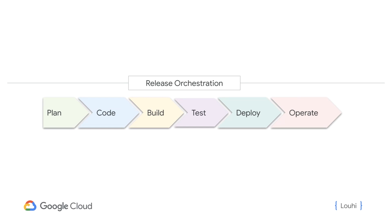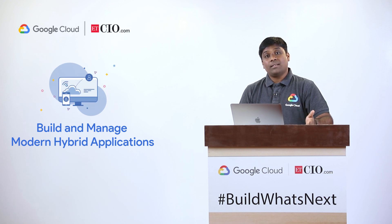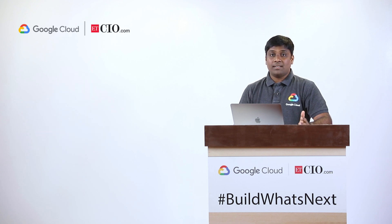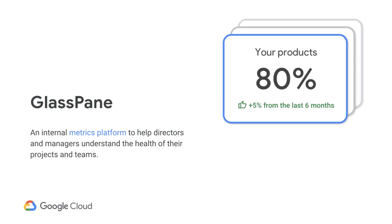Luhi is a release orchestration tool which helps in managing, scheduling, planning and controlling of the software release cycle including stages such as build, test and deploy through various stages across various environments. You can basically think of Luhi as a typical CI-CD tool. There is a concept called flow in Luhi, which is a collection of triggers that trigger pipelines with various steps, and as the pipeline finishes execution, notifications are fired. GlassPane is our internal metrics platform at Google that helps leaders understand the health as well as relative performance of their teams and projects, providing actionable insights.